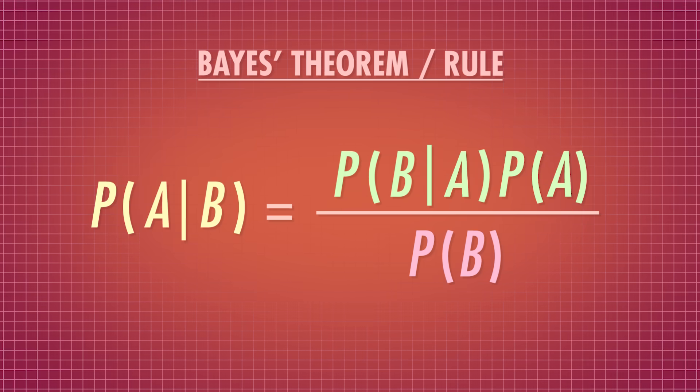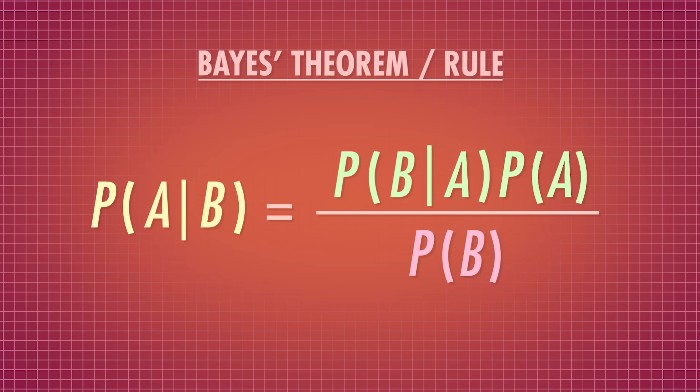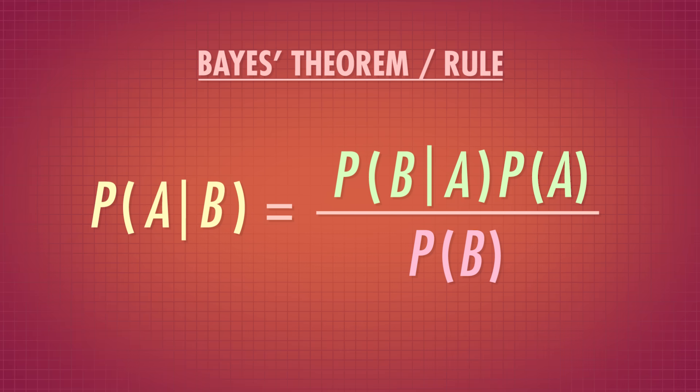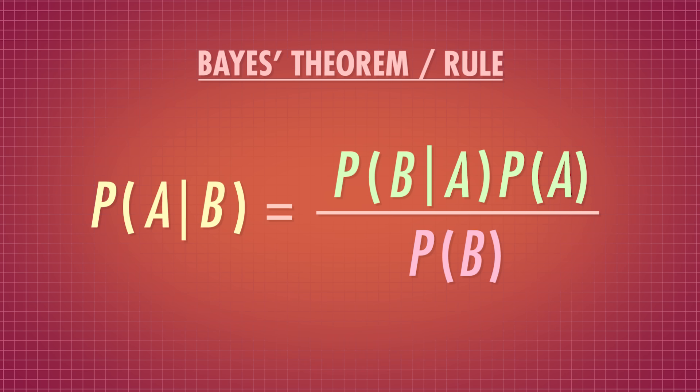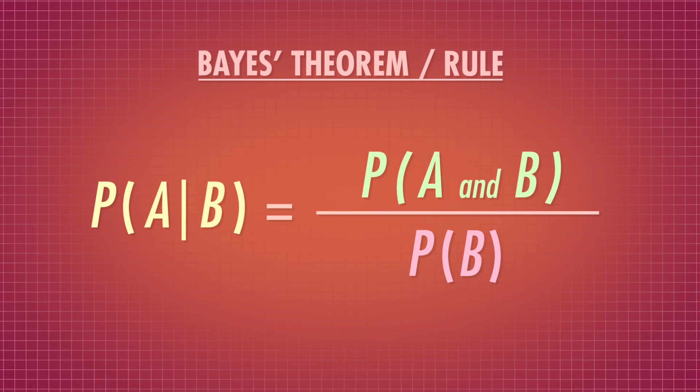Bayes' Theorem, or Bayes' Rule, tells us that the probability of A given B is the probability of B given A times the probability of A, all divided by the probability of B. And remember that the numerator in this equation is just another way of writing the probability of A and B. For example, when you're out to lunch, your sister mentions that she has a friend who has breast cancer, but she doesn't say much else. You recently saw a documentary about males with breast cancer, and because it's so fresh in your mind, you wonder if your sister's friend is a male. Your gut feeling is that it's not likely that they're male, but let's quantify it.